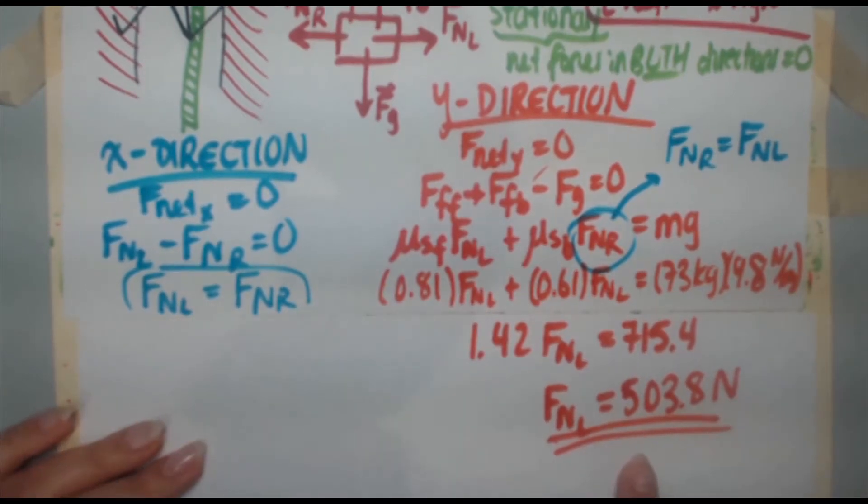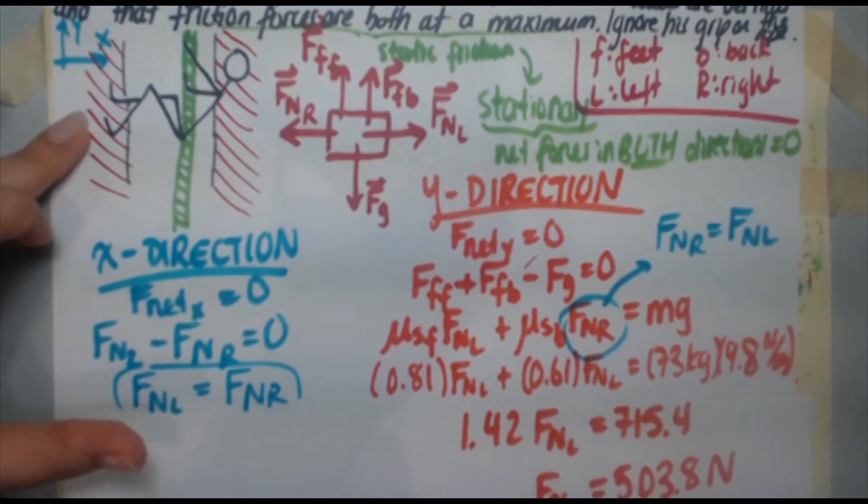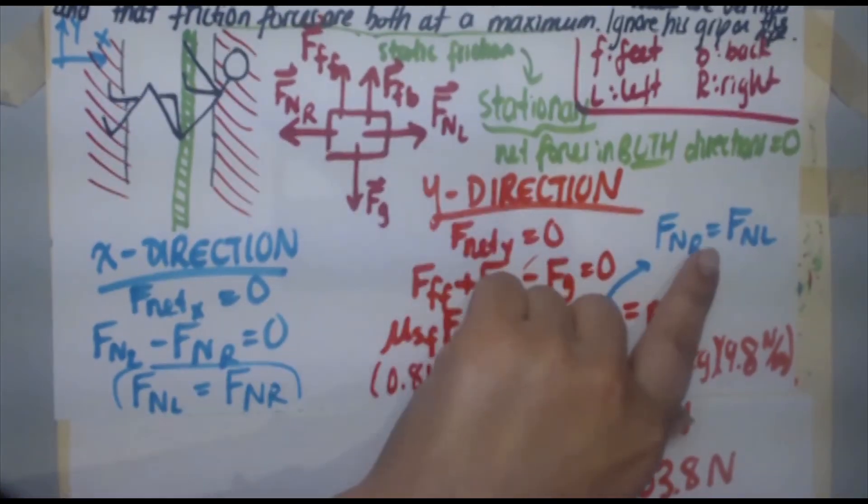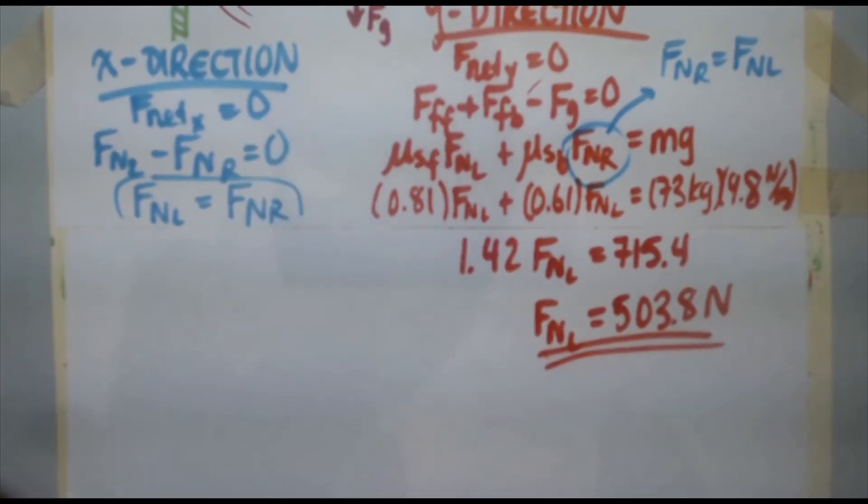So now according to Newton's third law, the climber therefore must be pushing on the wall with the same force. And that's the same for the back and the feet, because we established they have to be the same in order for the net force and the x to be 0. So that's the idea.